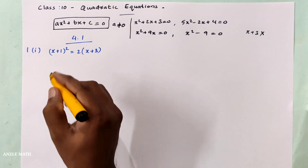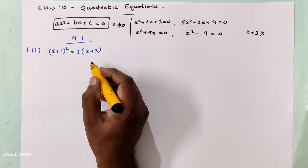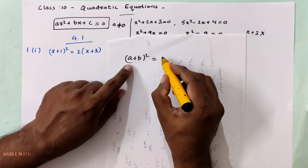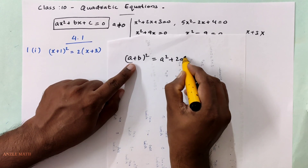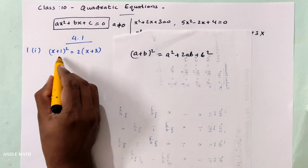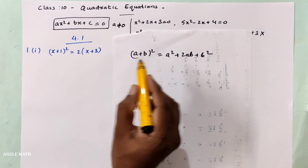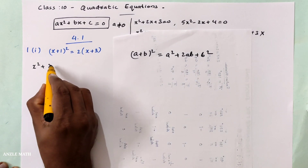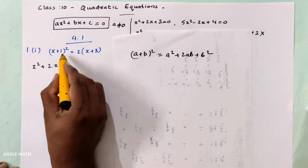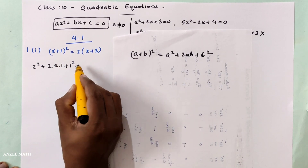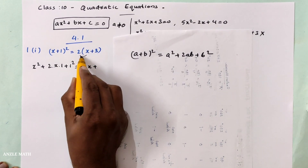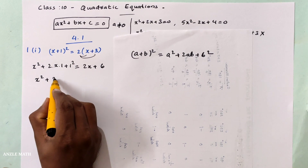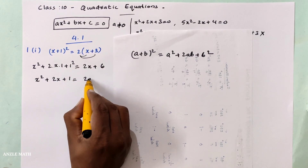Do a question: x plus 1, the whole square, equals 2 multiplied by x plus 3. Expanding the left side using (a+b)² = a² plus 2ab plus b²: x² plus 2 times x times 1 plus 1 squared equals 2 times x plus 2 times 3, giving x² plus 2x plus 1 equals 2x plus 6.